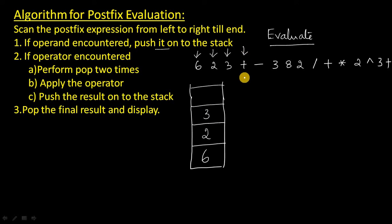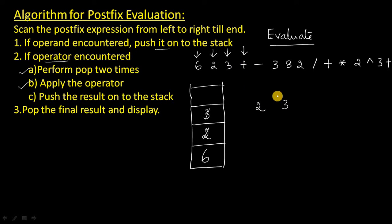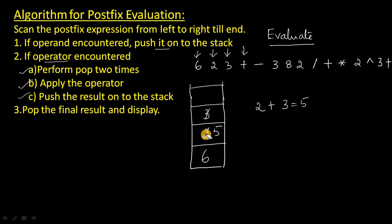And the next one is plus. Plus is an operator. So whenever you have an operator, perform the pop operation two times. So remove this 3 from the stack and remove this 2 from the stack, and apply the operator. The operator here is plus, so the result you are going to get is 5. Push the result onto the stack — add 5 here. Erase this 2 and 3 from the stack.